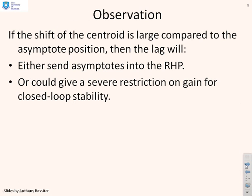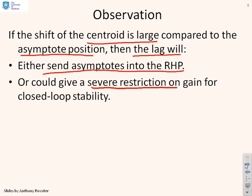So repeat the observations. If the shift of the centroid is large compared to the asymptote position, then what's the lag going to do? It can either send the asymptotes into the right half plane, or at best it's going to send them close to the right half plane, which gives us severe restrictions on the gains you can use for closed loop stability.